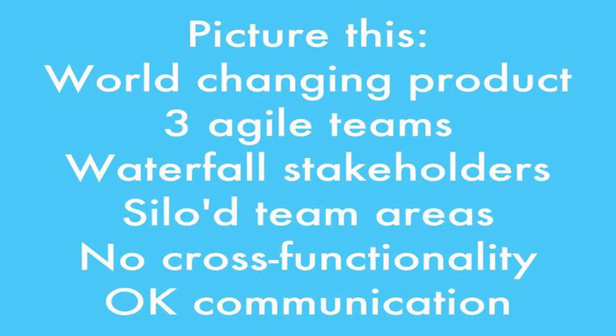So I'm talking about flow mapping today. I want you to picture this: we've got a potentially disruptive, world-changing product. We've got three agile teams. We've got waterfall stakeholders. We've got siloed team areas, so people are working very much in a niche. There's not a lot of really good communication between them and not a lot of cross-functionality either.